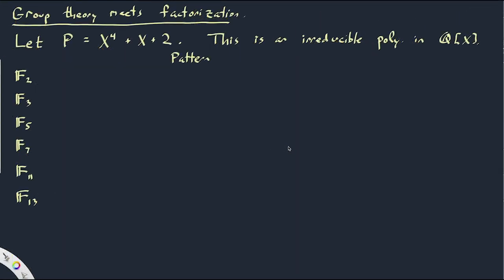To finish, I want to show you one more place where group theory meets factorization, connected to the sketch of Galois theory I just gave. Let's look at the polynomial x⁴ + x + 2. This polynomial is irreducible if we think of it as having rational coefficients — there's no way to factor it into two lower-degree polynomials over the rationals. Of course, over the complex numbers it would factor into linear factors, but over the rationals it cannot be factored.